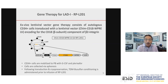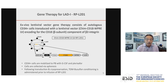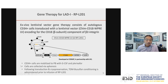The gene therapy approach for LAD1 is numbered RPL201 — an ex vivo lentiviral gene therapy consisting of autologous CD34 cells transduced with a lentiviral vector called Chimera CD18 WPRE LV, encoding the CD18 subunit of the beta integrin. The ITGB2 cDNA runs off a chimeric myeloid promoter. This was developed at CMAT in Madrid in partnership with investigators at University College London. CD34 cells are mobilized with G-CSF and plerixafor, collected by leukophoresis, transduced and cryopreserved, and then therapeutic myeloablative busulfan conditioning is administered prior to infusion.